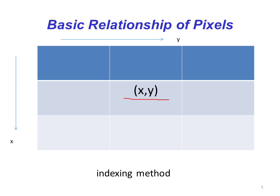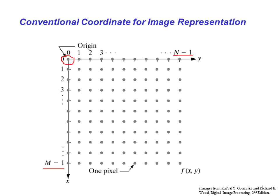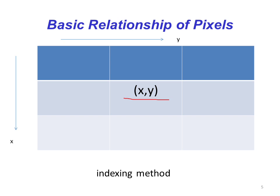On the screen you can see a conventional coordinate system. To understand basic relationship of pixels, consider a small portion of an image that is cropped - it is a 3x3 neighborhood as seen on the screen. XY is the vertical and diagonal neighborhood.